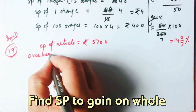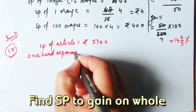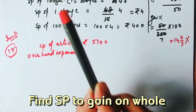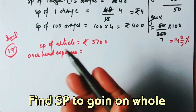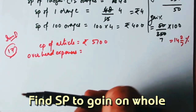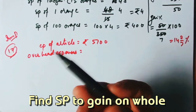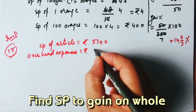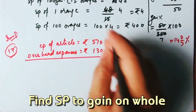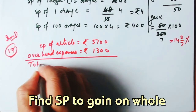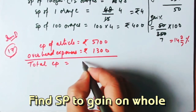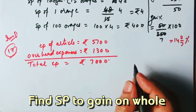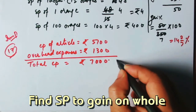For example, if you buy a pen for ₹10 and spend ₹5 on refilling it, your total cost is ₹15, not ₹10. Similarly here, overhead expenses = ₹1300, so the total cost price = ₹5700 + ₹1300 = ₹7000.